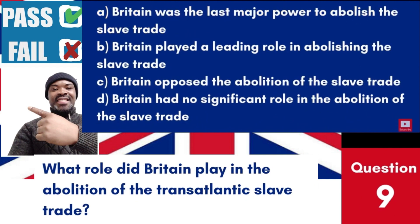Question 9: What role did Britain play in the abolition of the transatlantic slave trade? a. Britain was the last major power to abolish the slave trade. b. Britain played a leading role in abolishing the slave trade. c. Britain opposed the abolition of the slave trade. d. Britain had no significant role in the abolition of the slave trade. Answer: b. Britain played a leading role in abolishing the slave trade. Britain was instrumental in the abolition of the transatlantic slave trade, passing the Slave Trade Act in 1807.